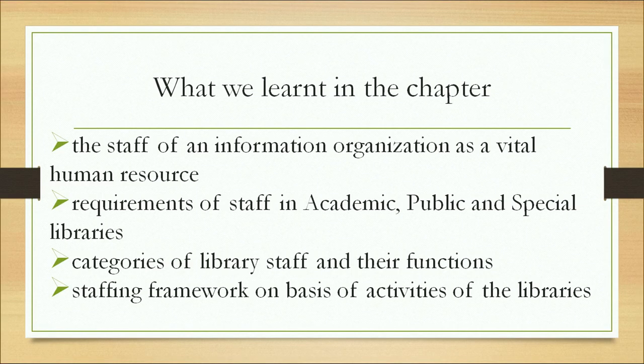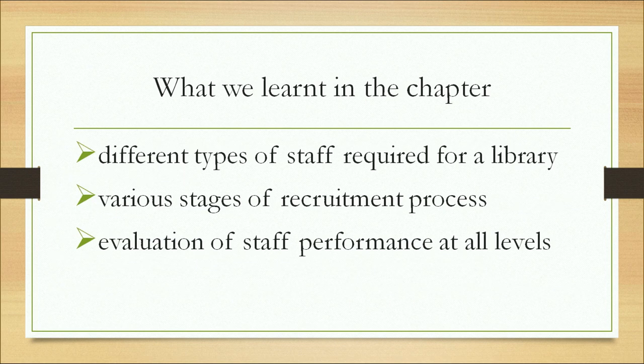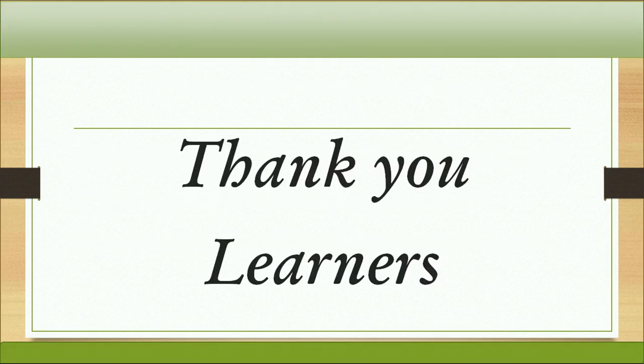To summarize what we have learned in this chapter: the staff of an information organization is a vital human resource; requirements of staff in academic, public, and special libraries; categories of library staff and their functions; the staffing framework based on library activities and different types of staff required; various stages of the recruitment process; and evaluation of staff performance at all levels. Thank you so much.